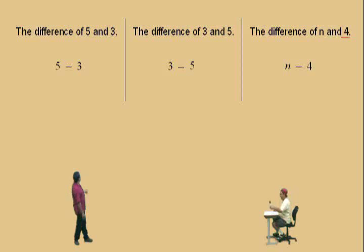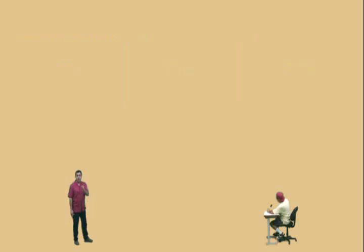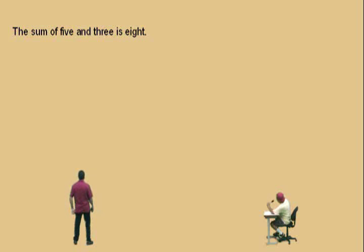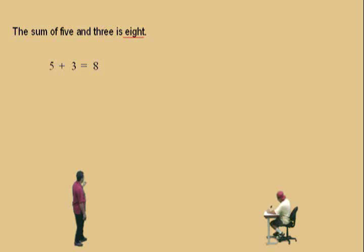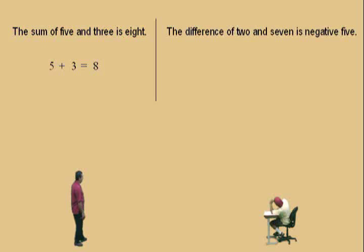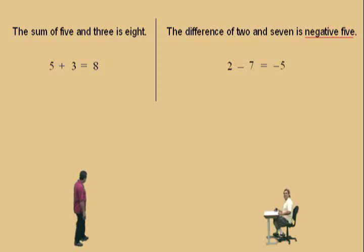Here's our next example. We're going to bring in an equal sign. Remember, the word 'is' means equals. Okay Charlie, go ahead and read and let the microphone do its job. The sum of 5 and 3 is 8. Right there is the sum of 5 and 3, and it's equal to 8. Very nice, Charlie. Let's do another one. The difference of 2 and 7 is negative 5. And the difference of 2 and 7 is negative 5.